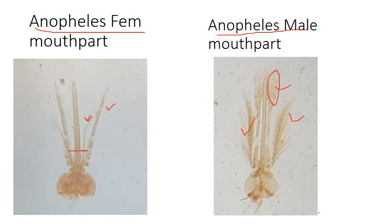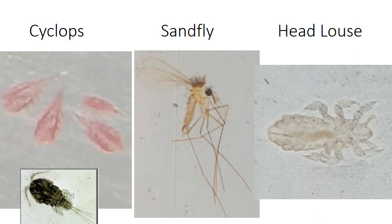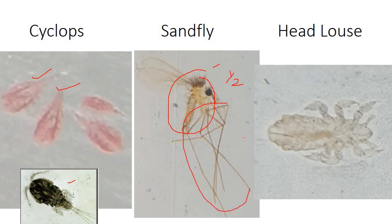Other insects besides mosquitoes: the sandfly belongs to class Insecta. It looks similar to a mosquito, but when viewed, the size is almost half that of a mosquito. It is a hairy animal and the legs are comparatively much larger relative to its body. These features help you suspect and identify it as a sandfly.